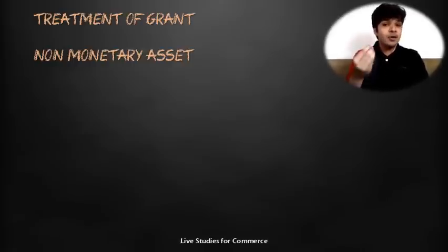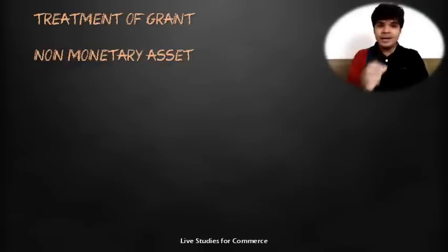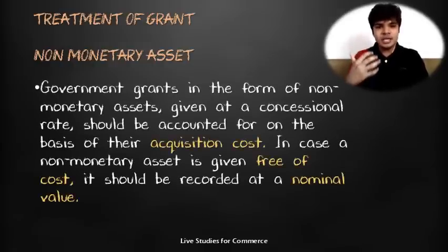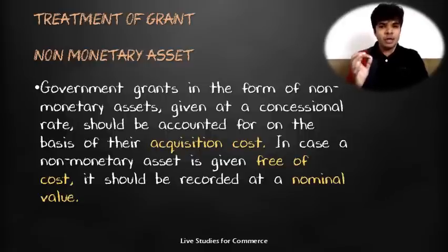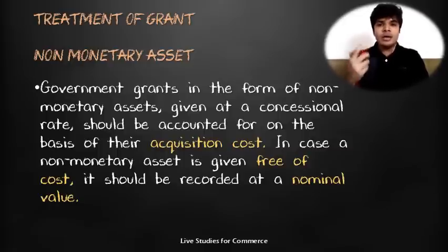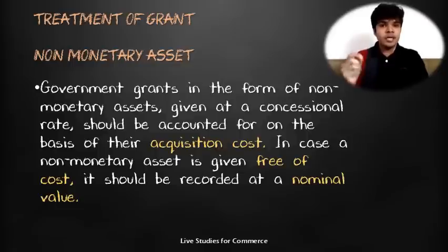If the government gives an asset itself instead of money, or gives an asset at a concessional rate, that is a non-monetary grant. Government grant in the form of a non-monetary asset given at a concessional rate should be accounted for based on the acquisition cost. If the non-monetary asset is given free of cost, it should be recorded at a nominal value.